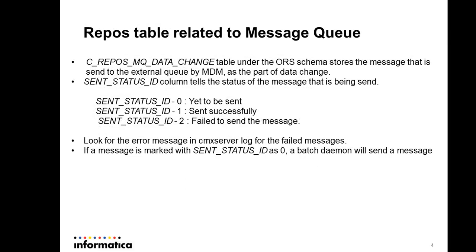There is a table called C_REPOS_MQ_DATA_CHANGE under the ORS schema, which stores all the messages sent by MDM to the external queues. You can use this table to check what messages have been sent and what the status of each message is. To know the status, you have the column send_status_id in that table. This will tell you whether the message has been pushed to the queue or not.